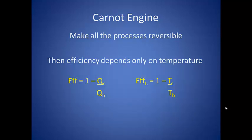Now, if all of the processes are reversible, then the efficiency depends only on the temperature of the two reservoirs. So if efficiency is equal to 1 minus the cold heat divided by the hot heat, then we can also say that efficiency is equal to 1 minus the cold temperature divided by the hot temperature. This lets us be able to determine the maximum efficiency on a system based only on its temperature.